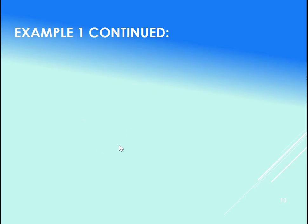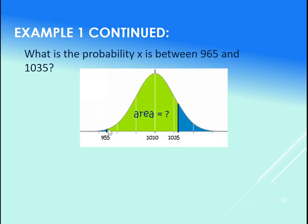Okay, now finally, what if I wanted the probability of x being between two different values? So I want the area between two x values, so let's say 955 and 1035.